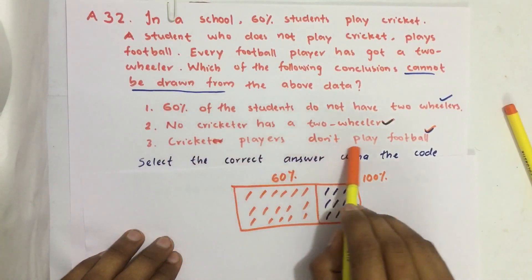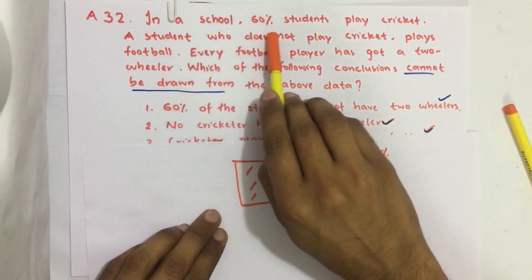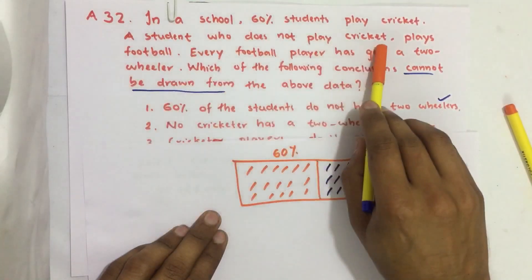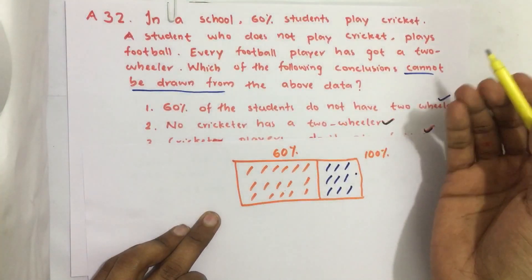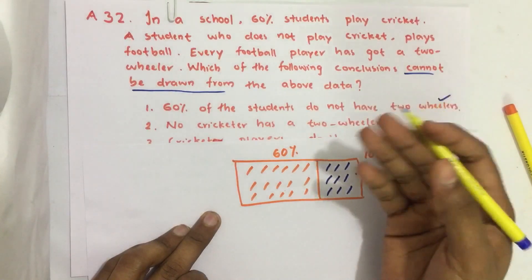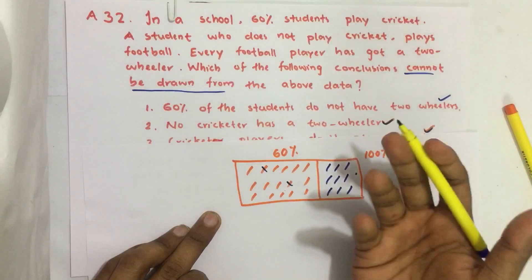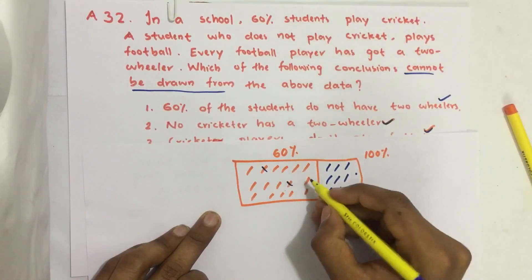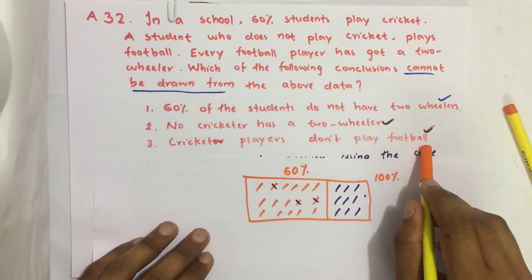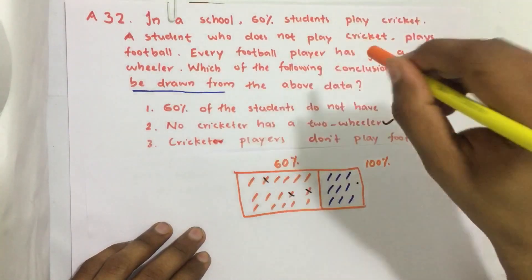The third conclusion is: cricket players do not play football. In the first statement it is given that 60% of students play cricket, and a student who does not play cricket plays football. But there is a chance that students who play football may or may not also play cricket — some students may play both cricket and football. So we can't conclude that cricket players don't play football from the given data.